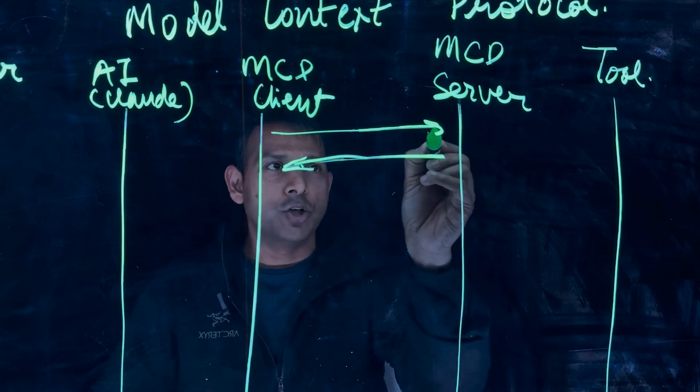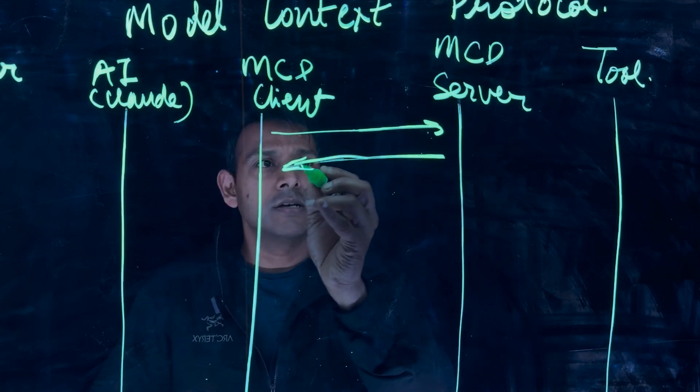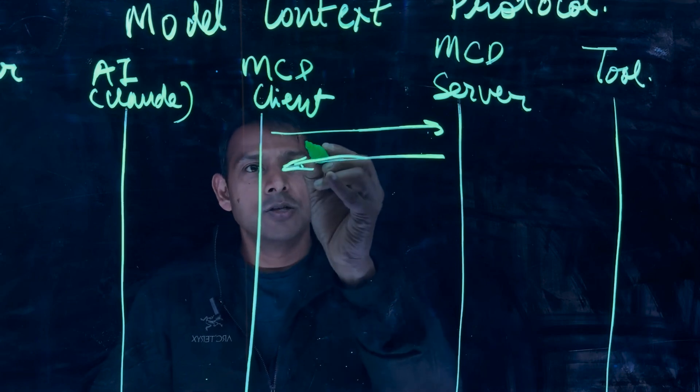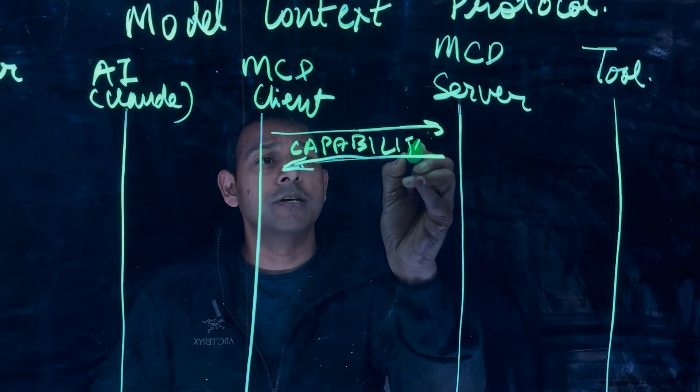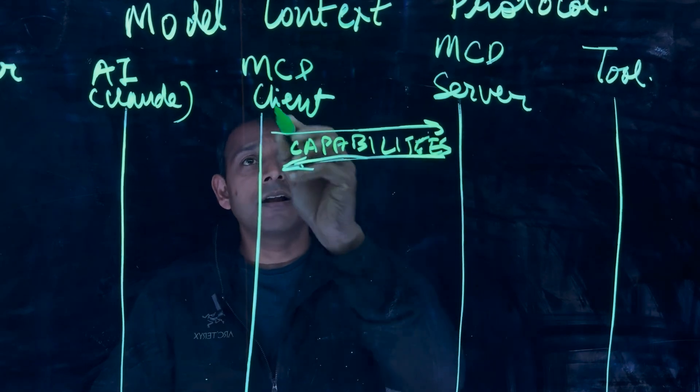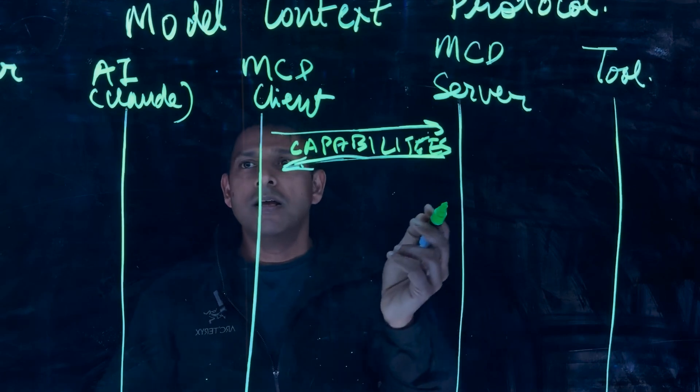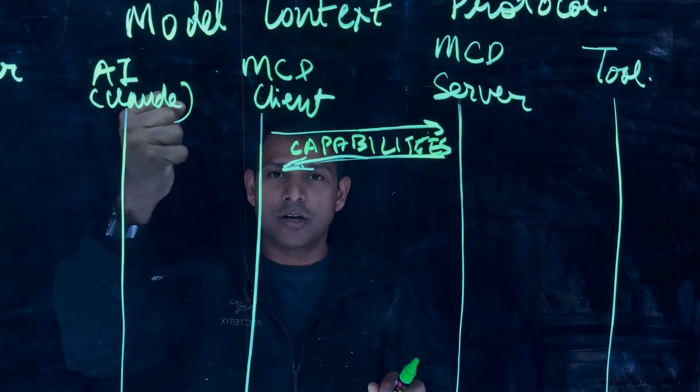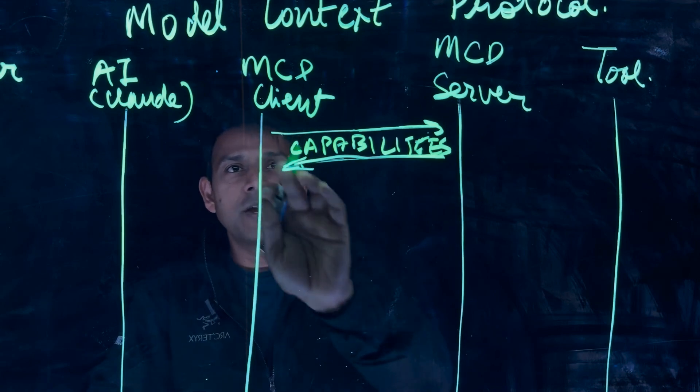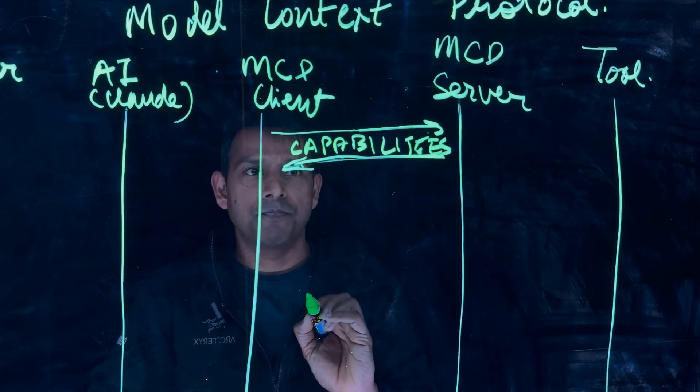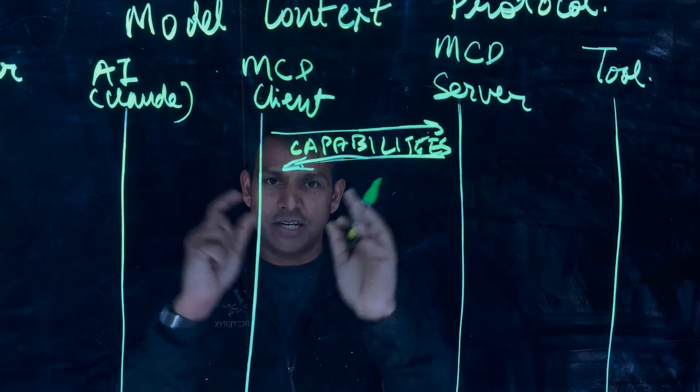One is the initiation where the client initiates a connection to the server. Server returns the list of capabilities. So pretty much the capabilities discovery is the big piece here where now the client knows what are the tools available, what capabilities are available, so that it can respond with the right set of tools and right set of functions when AI requests it. And this set of capabilities is registered here with the client.